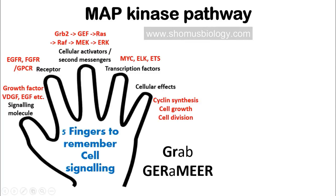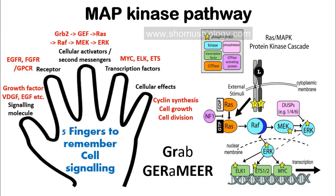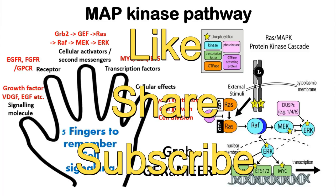Here is the big picture of the MAP kinase pathway. You can see the binding of the ligand causing cross-phosphorylation of Receptor Tyrosine Kinase, which activates RAS through GRB2, SOS, and GEF. Once RAS is activated, RAS activates RAF, RAF activates MEK, MEK activates ERK, and finally ERK signals the transcription factors ELK1, ETS1/2, and MYC, which then drive transcription of the desired genes. That's how the MAP kinase pathway works.